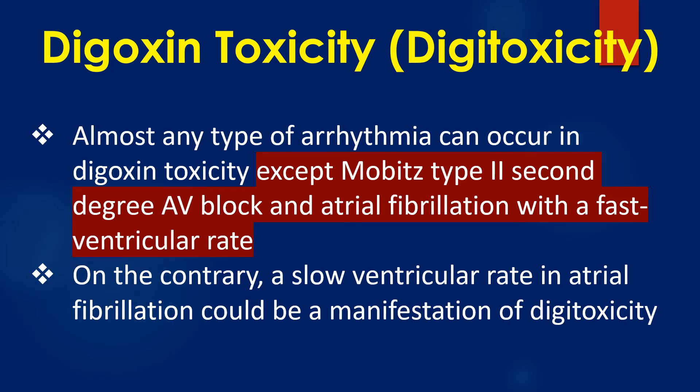Almost any type of arrhythmia can occur in digoxin toxicity, except Mobitz type II and atrial fibrillation with a fast ventricular rate. On the contrary, a slower ventricular rate in atrial fibrillation could be a manifestation of digoxin toxicity.